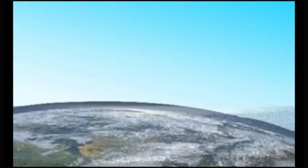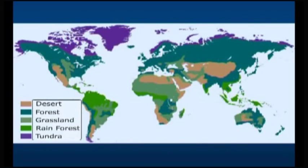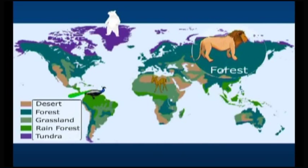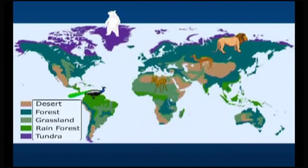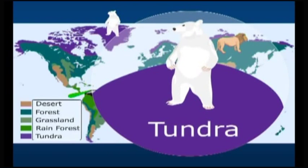Unlike sea, land is not continuous. It is divided into specific geographical areas. The living conditions are different in different geographical areas such as deserts, polar ice caps, etc., and are specific to a given location. These areas are well separated and organisms usually do not move freely from one geographical area to another. As a result, organisms living in a particular geographical area have developed special characteristics which help them to survive in that particular geographical area.